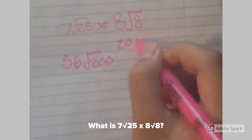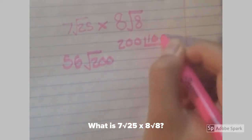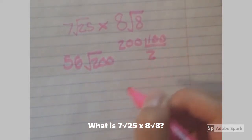We'll divide 200 by 100, and that equals 2. So we'll have this equation.